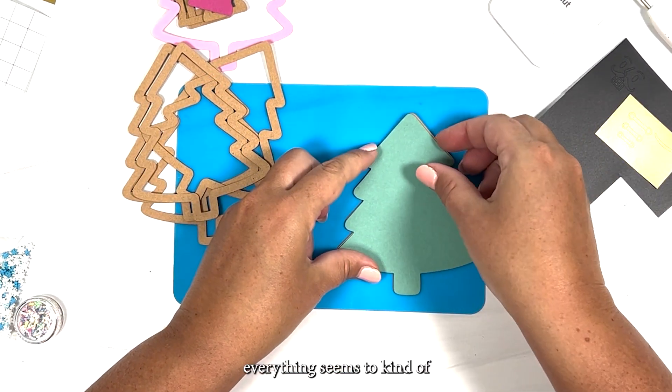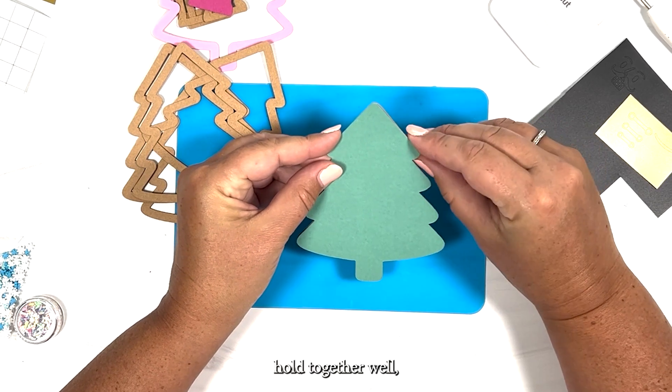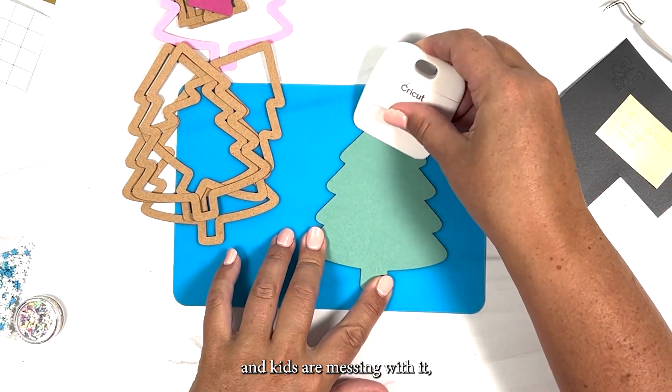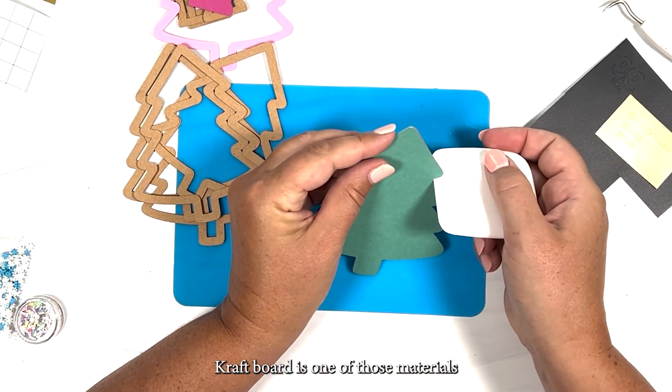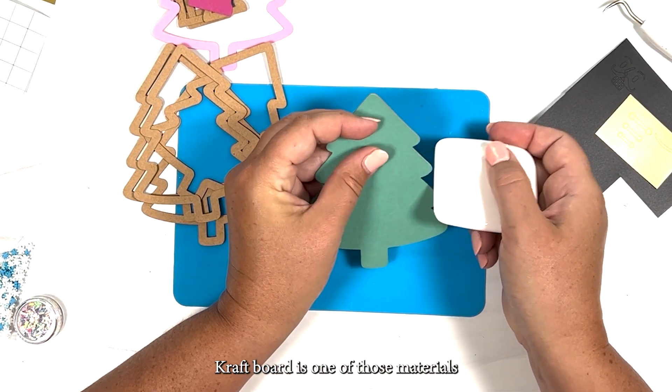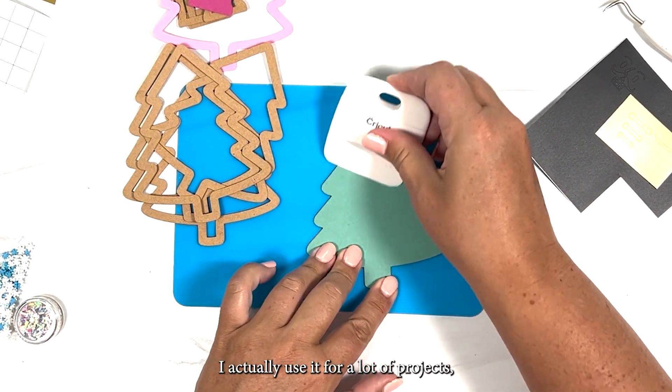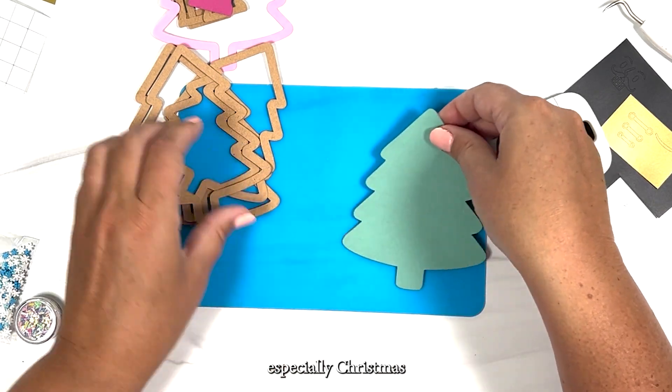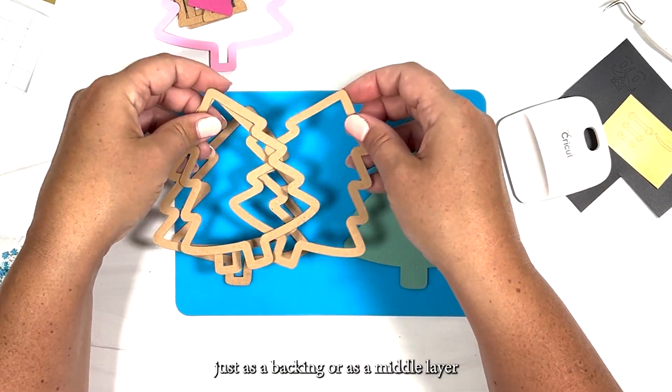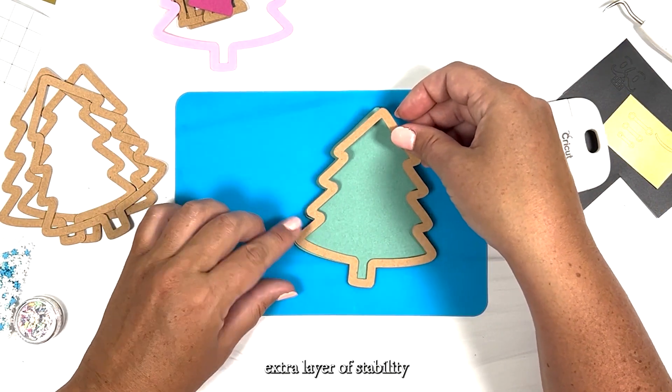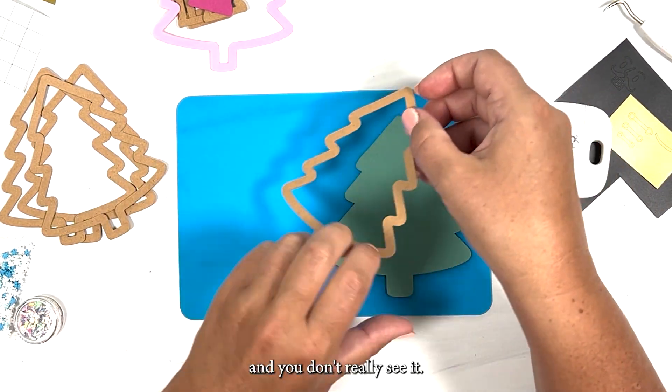The craft board gives the edges a little bit more stability so when you apply the layers and then the acetate, everything seems to kind of hold together well. And especially if you're hanging it in the tree and kids are messing with it, you don't want a flimsy ornament. Craft board is one of those materials that are really good for providing that stability. I actually use it for a lot of projects, especially Christmas ornaments, just as a backing or as a middle layer or whatever, just to give that extra layer of stability and you don't really see it.